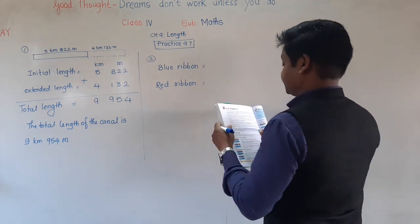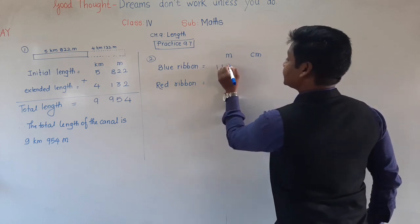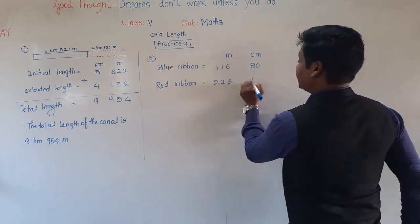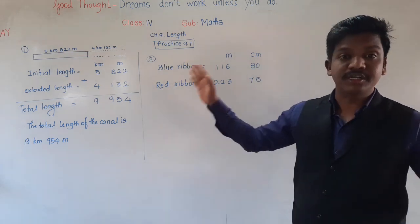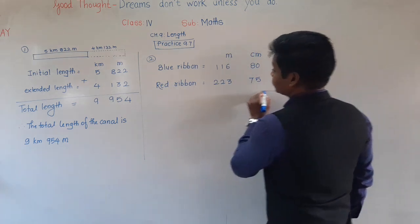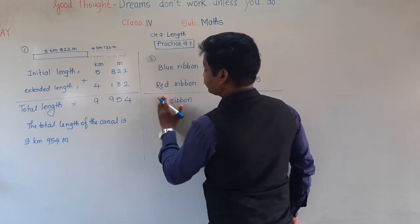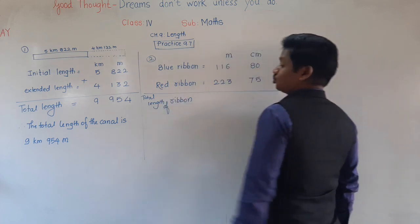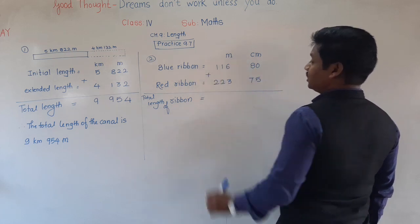How long a blue ribbon has he purchased? The length of the ribbon is given in meter and centimeter. Blue ribbon: 116 meter and 80 centimeter. Red ribbon: 223 meter, 75 centimeter. The question asks — altogether, total, how much long ribbon including red and blue has he purchased? That we have to find. To find total length of ribbon altogether, we need to add them.